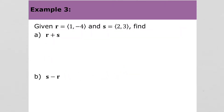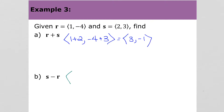For example 3, we're just going to perform some vector operations. So adding r plus s: we take the x values, add them, take the y values, add them, and we get the vector (3, -1). So subtracting s minus r: starting with s, we take the x values, subtract them, take the y values starting with s, and subtract them. And our new vector is (1, 7).